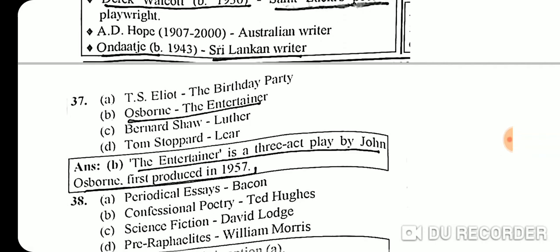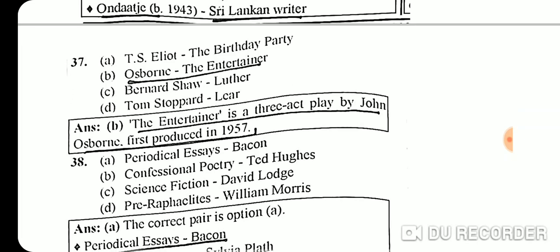Question 37: The correct option is Osborne — 'The Entertainer.' The Entertainer is a three-act play by John Osborne, first produced in 1957.